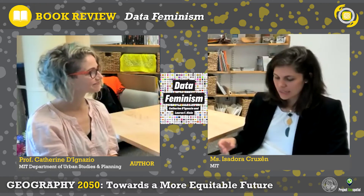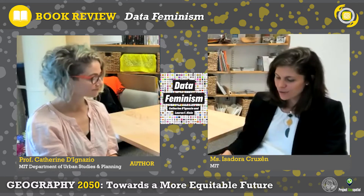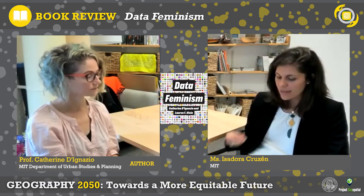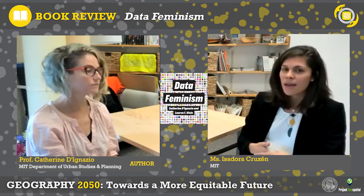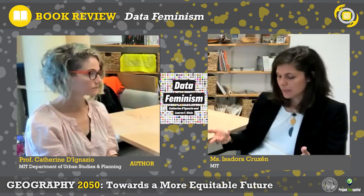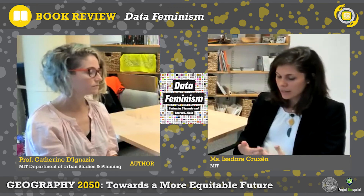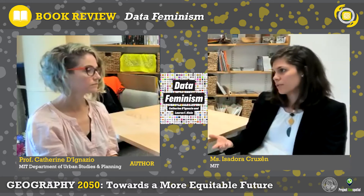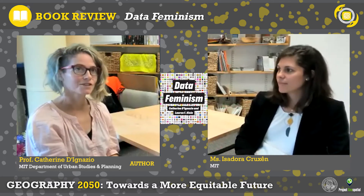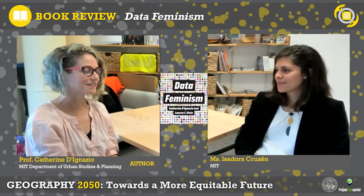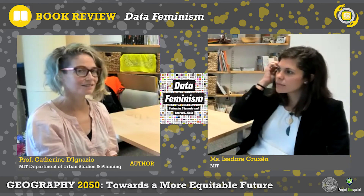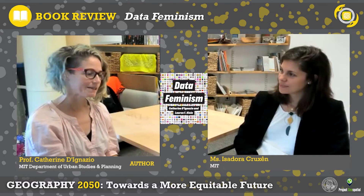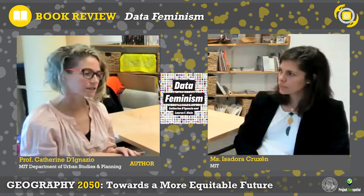I wanted to turn attention to the theme of the American Geographical Society's event — Geography 2050: Toward a More Equitable Future — and talk about the intersections between data feminism and geography. What do you see as the relevance of this book for our understanding of spatial dimensions of inequality? And how can you help us think through the role of spatial analysis and geography in building a more equitable future? I'm thinking a lot about these questions right now. In our department I teach the GIS and spatial analysis course, and just this week we've been talking about the ethics of mapping. I think there are many connections.